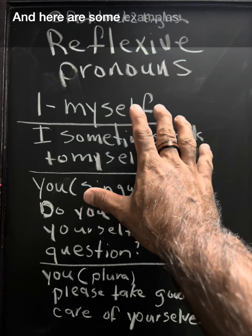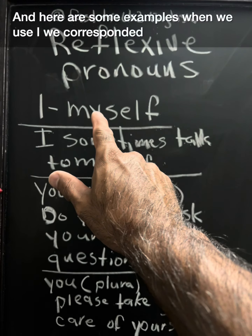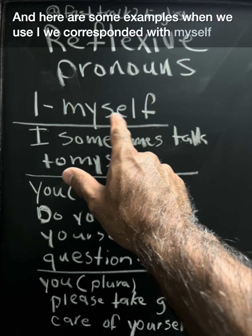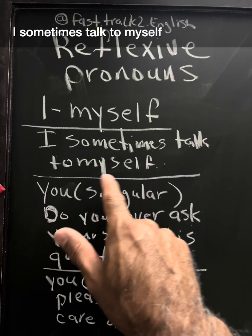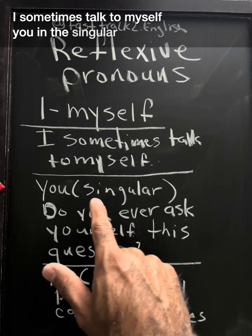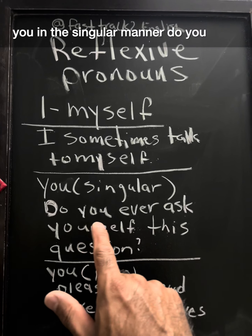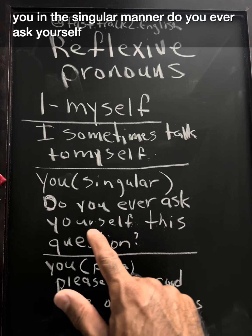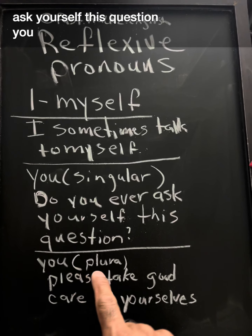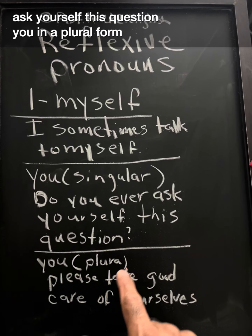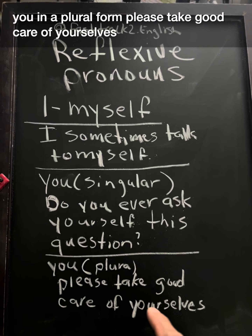And here are some examples. When we use I, we correspond it with myself. I sometimes talk to myself. You in the singular manner: Do you ever ask yourself this question? You in the plural form: Please take good care of yourselves.